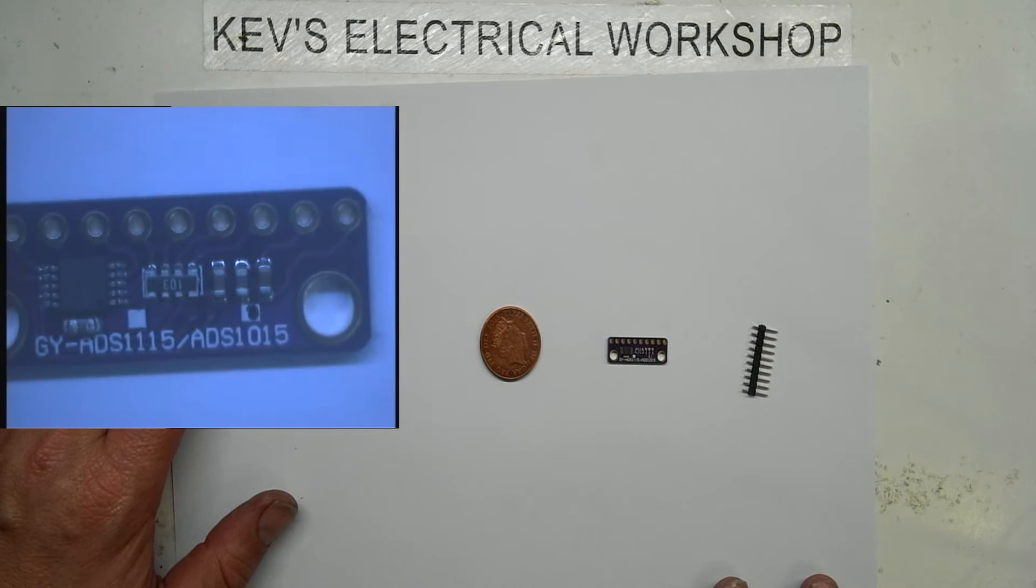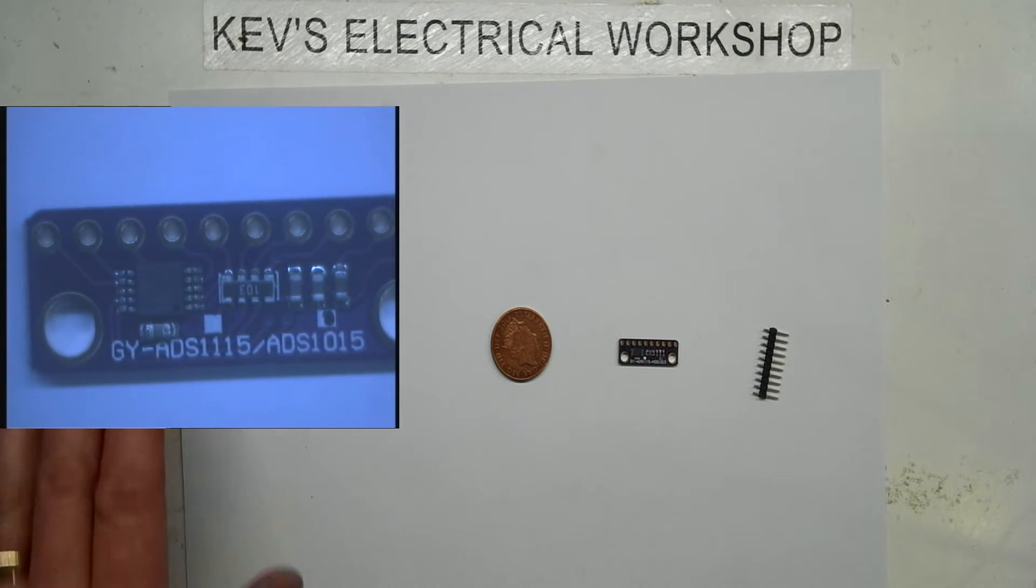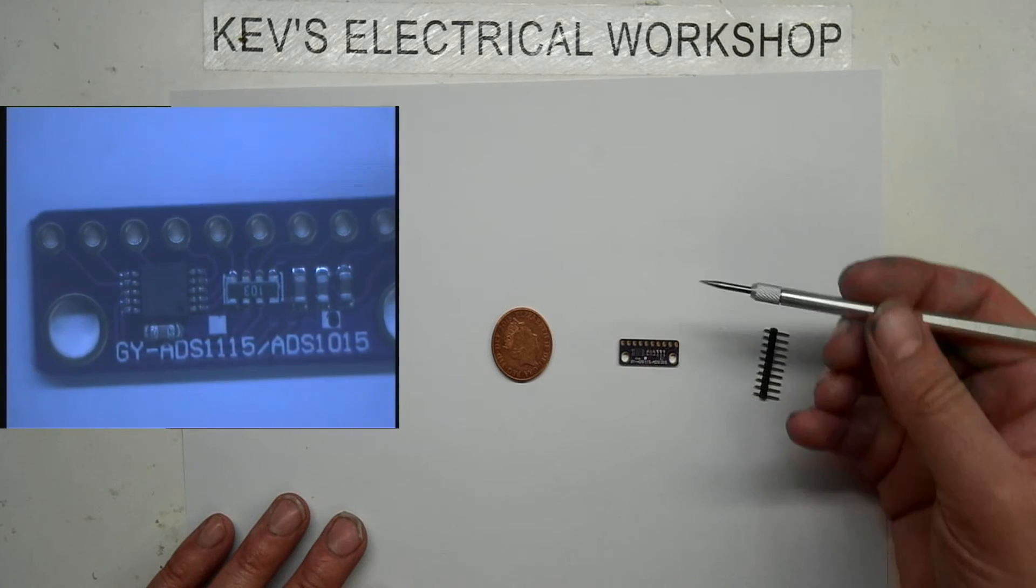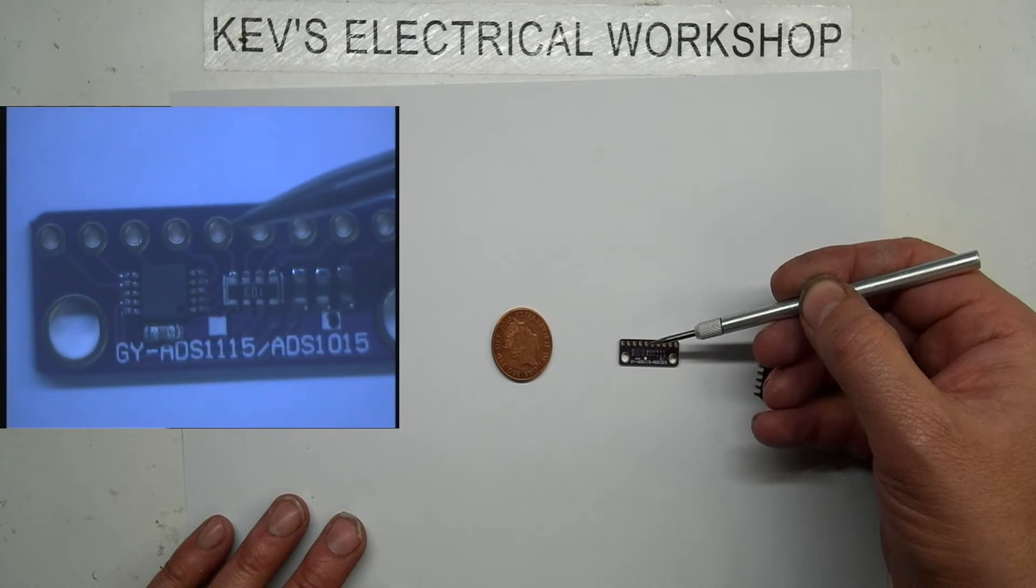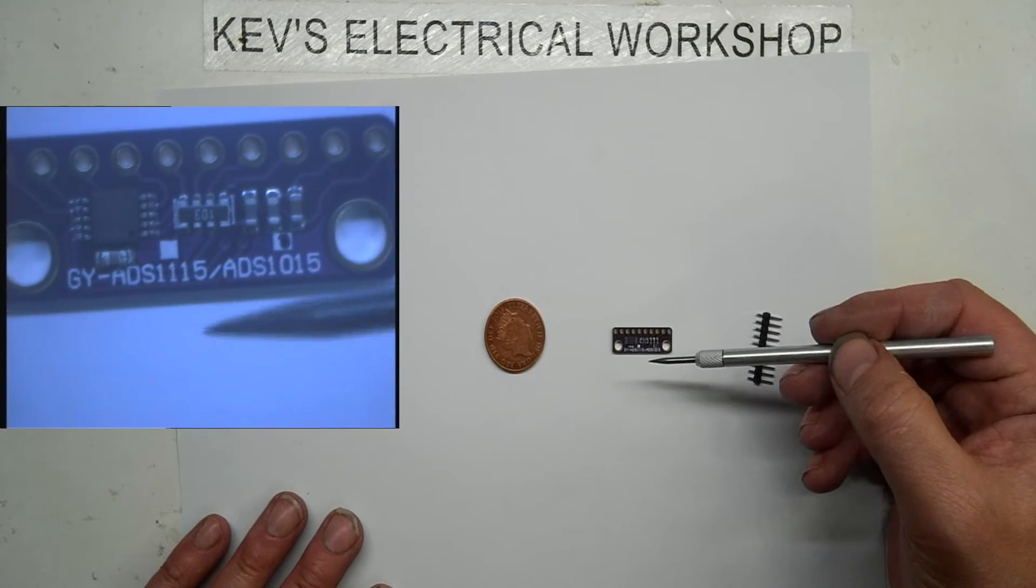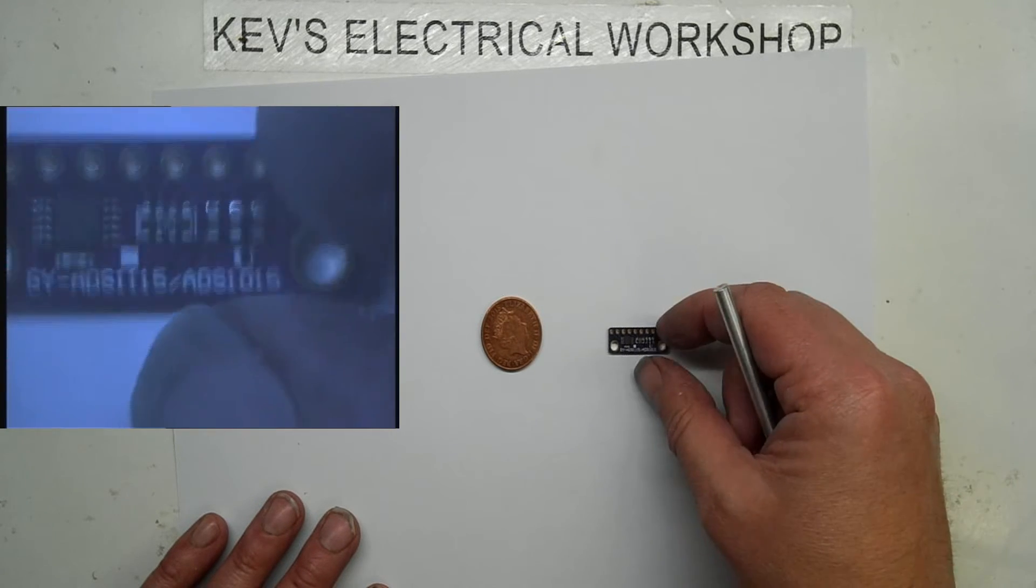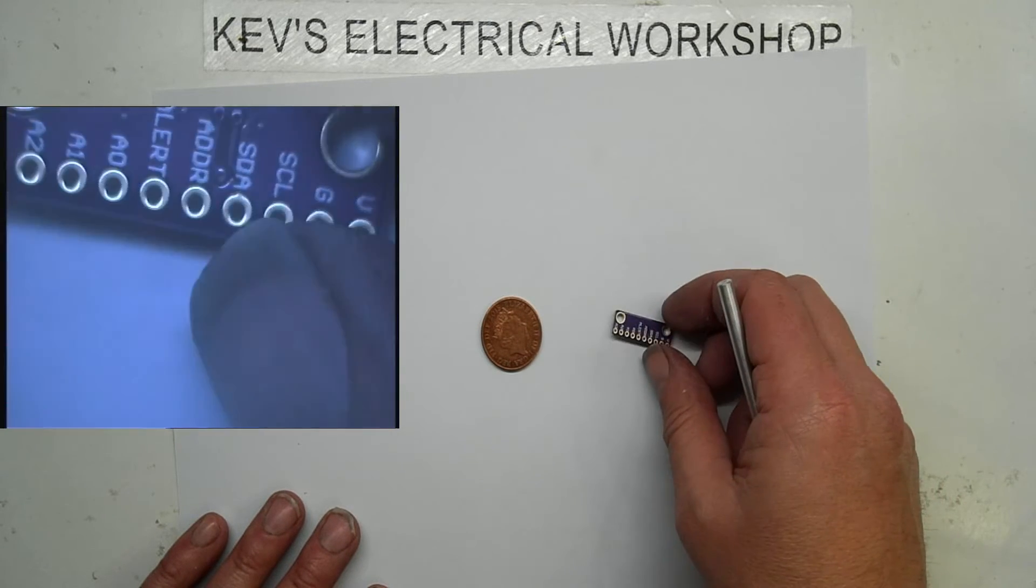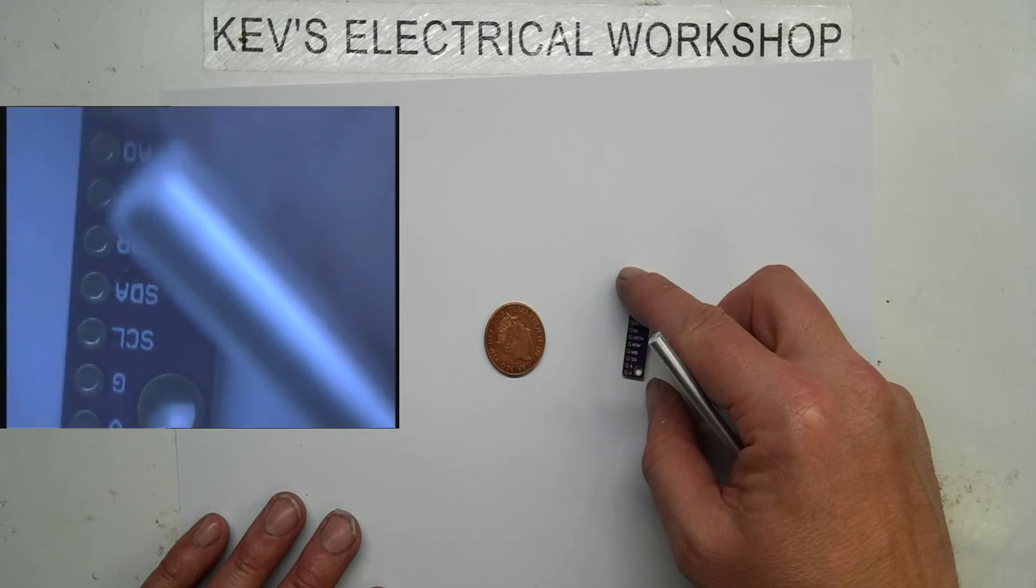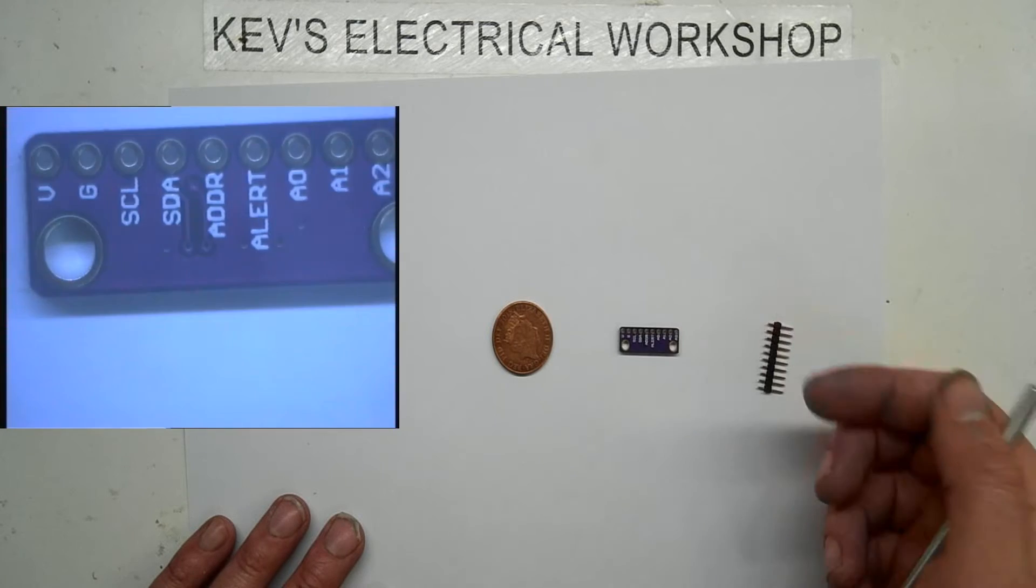All right, on this side all we can see, let's get a pointer device so you know where I'm pointing. Obviously this is where the header goes and obviously two mounting positions. Let's have a look on the other side. Okay, that's nice, it's screen printed on this side, so what we got.